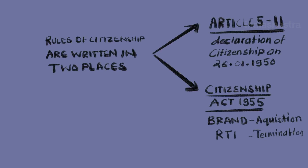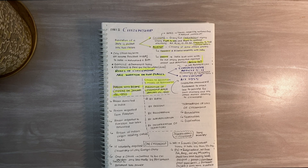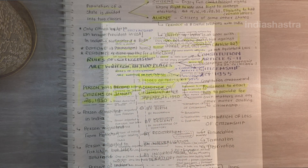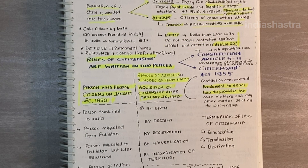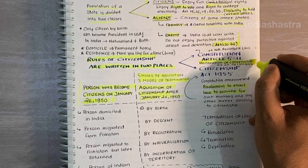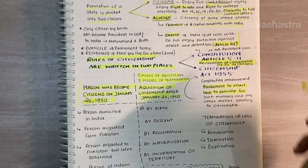Part 2 does not say how to acquire Indian citizenship in the future. The constitution empowered parliament to enact a law to provide for such matters and any other matter related to citizenship. In this lesson, we shall deal with the first, that is Part 2 of the Indian Constitution, Article 5 to 11.